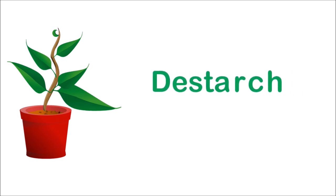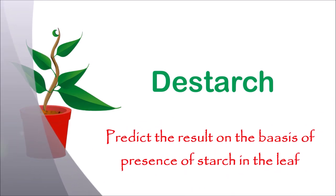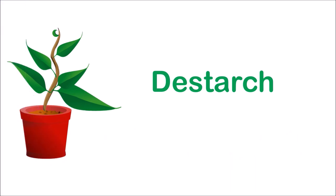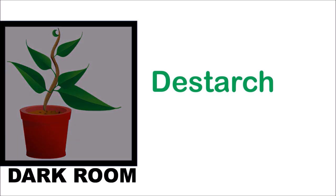We are going to predict the result on the basis of the presence of starch. So if starch already exists in the plant, we cannot get the proper result. Therefore, before conducting the experiment we need to remove the starch already present in the leaf. To do so, we need to keep the potted plant in a dark room for a week.